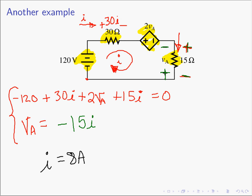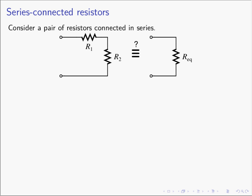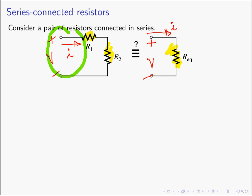Now let's look at a special case of resistors connected in series. Consider a pair of resistors R1 and R2 connected in series — whatever current flows through R1 must flow through R2. The question is: is there a single equivalent resistor that behaves the same as these two in series? By equivalent, I mean: given a voltage at the terminals, the same current flows; the two circuits have the same voltage-current relationship at their terminals.